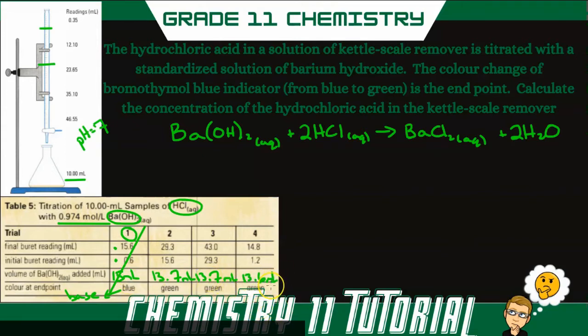So it was done three times. And you can see they're all fairly close. And what you want to do in science is you want to take the average. When you take the average, keeping to significant digits, we get a volume of barium hydroxide that we added to be 13.7 milliliters.